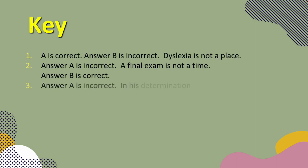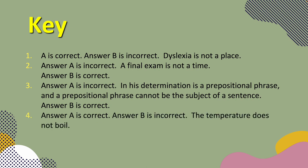Let's take a look at the key. For number one, A is correct. B is obviously incorrect — dyslexia is not a place. For number two, answer A is incorrect — a final exam is not a time. Answer B is correct. For number three, answer A is incorrect. 'In his termination' is a prepositional phrase, and a prepositional phrase cannot be the subject of a sentence. Therefore, answer B is correct. For number four, answer A is correct. Answer B is incorrect — the temperature does not boil.